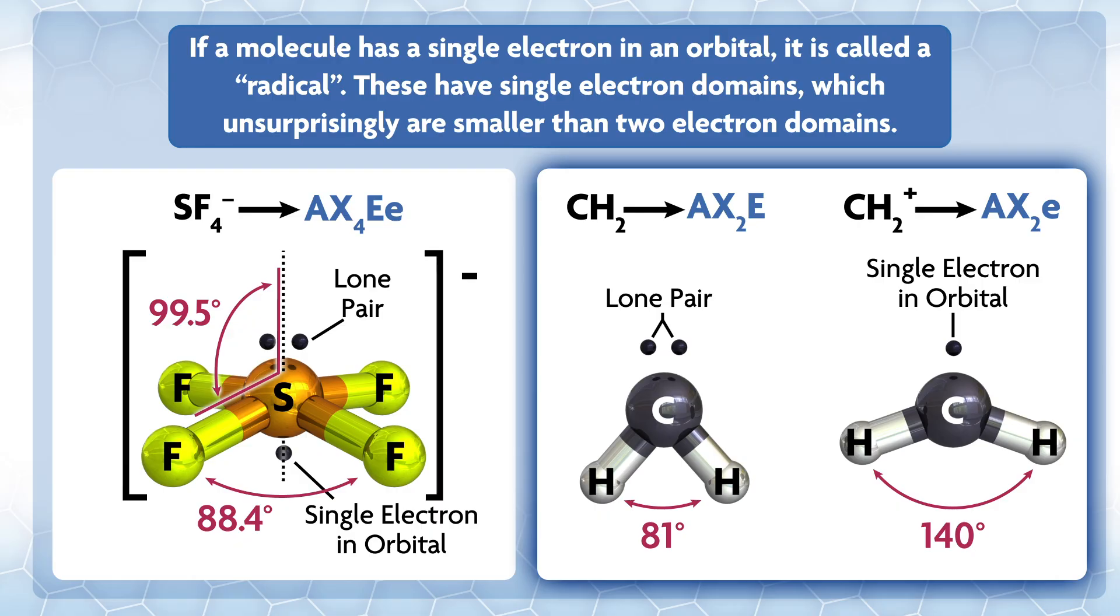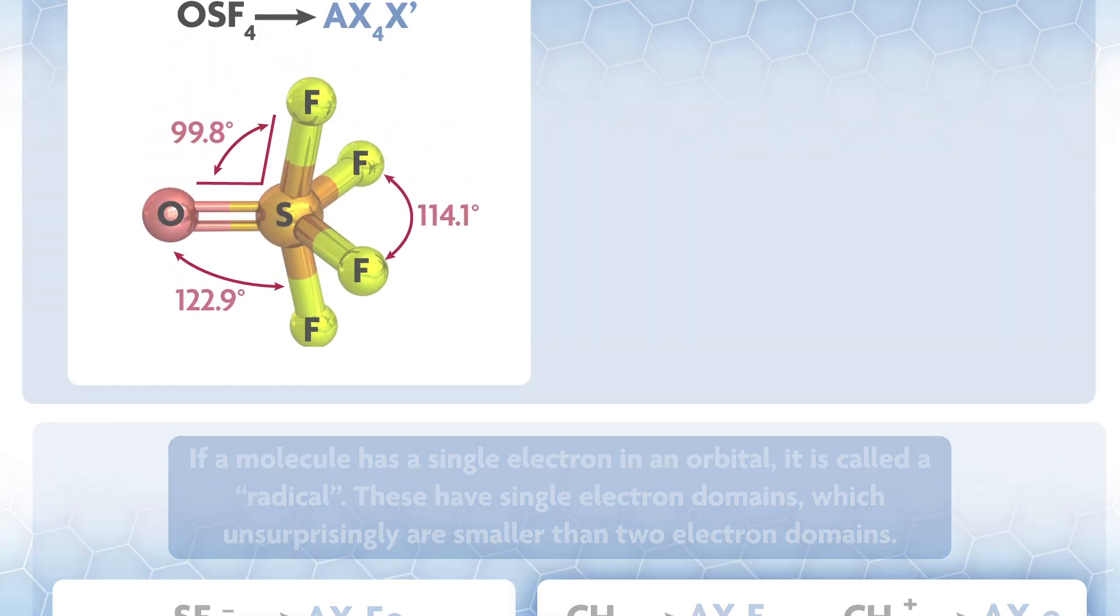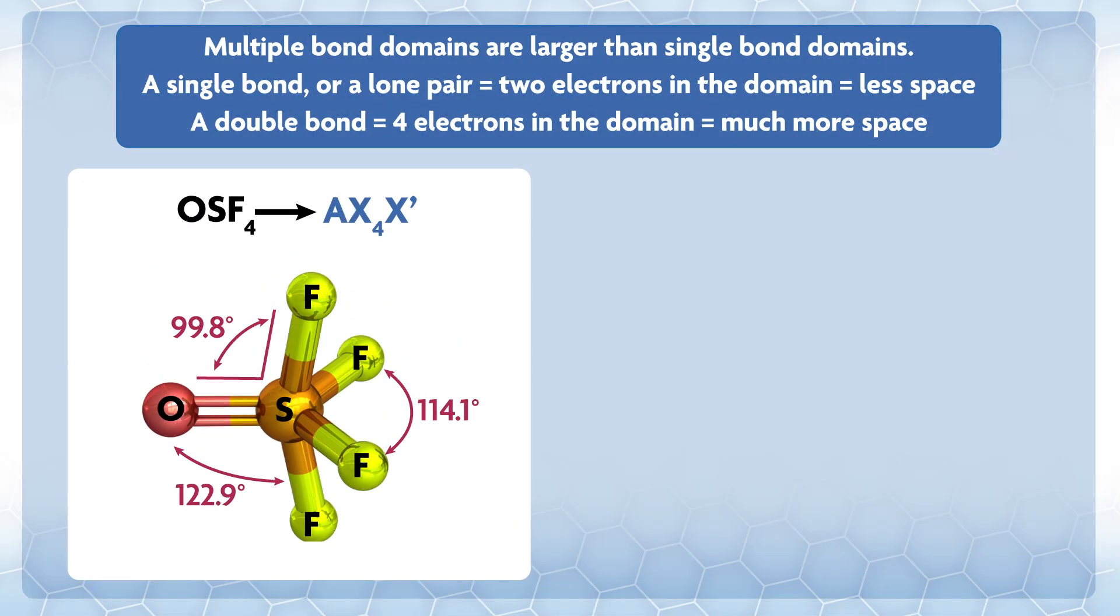If we compare singlet methylene CH2 with our lone pair and CH2 radical cation, the lone pair pushes the hydrogens to a very small angle of 81 degrees, while the small radical one-electron domain gives a much wider H-C-H angle of 140 degrees.